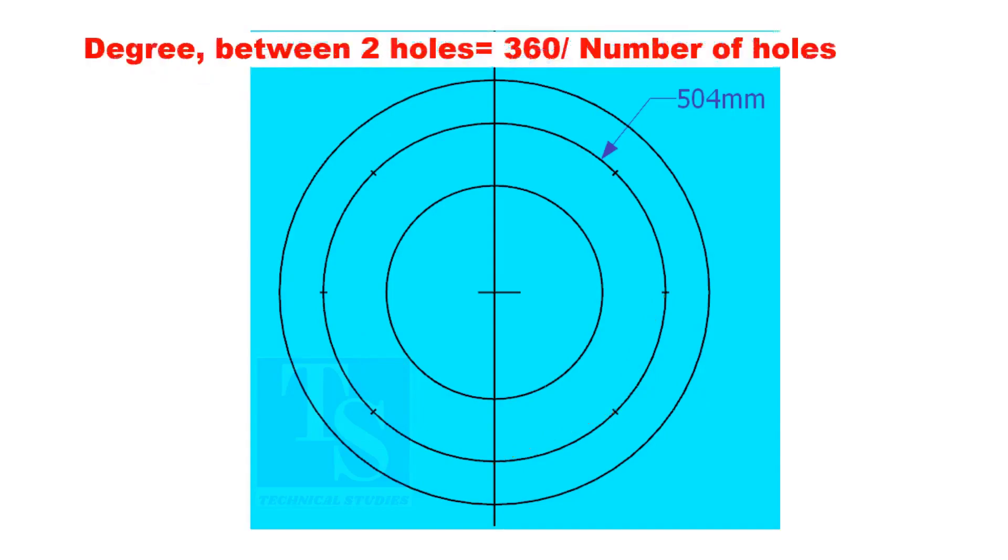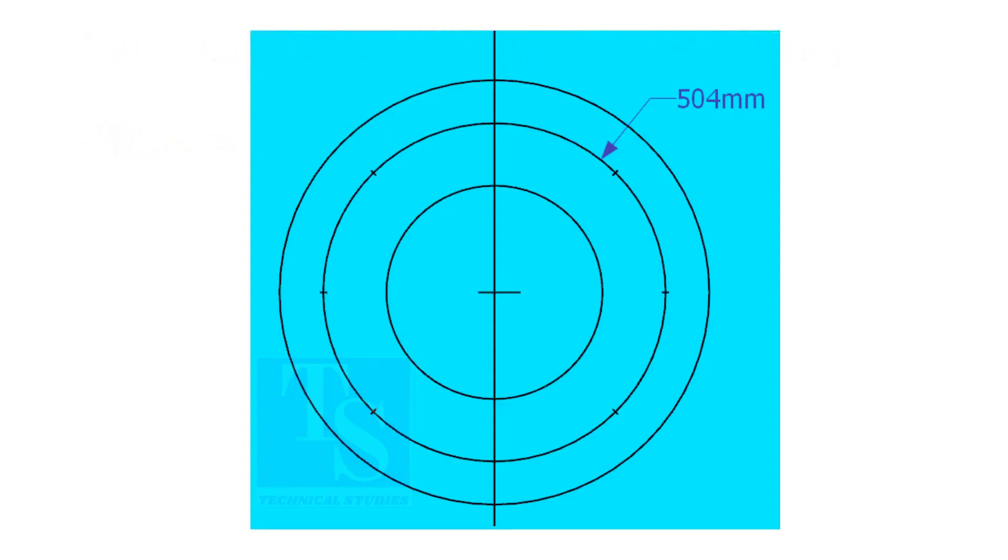If you divide 360 by the number of holes, you will get the angle between two holes. Cord length equals sine 45 divided by 2 multiplied by PCD.